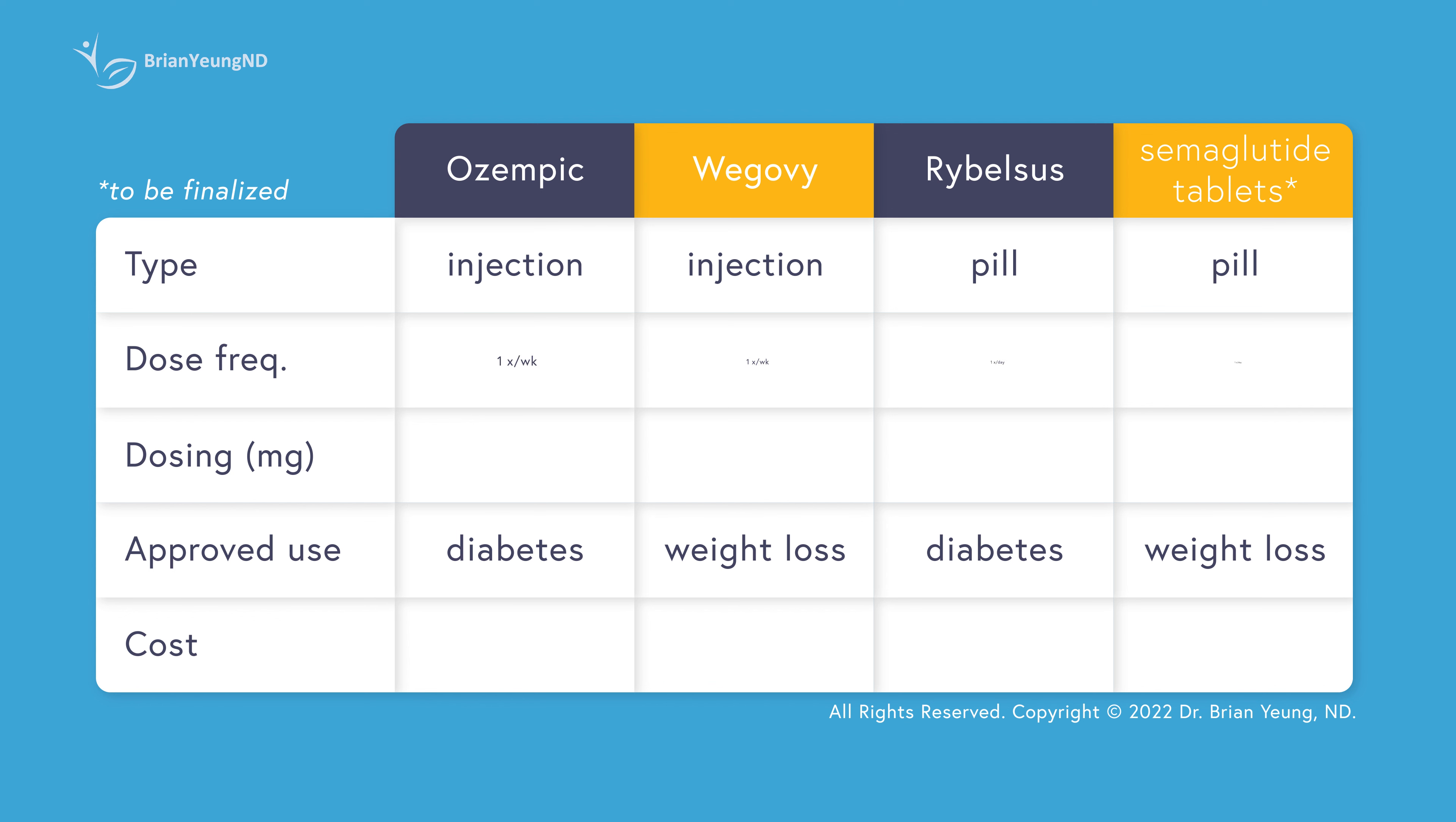Semaglutide has always started at a lower dose and gradually increased until you reach the maximum dosage. Brands approved for weight loss have more steps and a higher maximum dose compared to those approved for diabetes. Though people sometimes use semaglutide off-label for different purposes, FDA-approved uses are important for insurance coverage and cost.